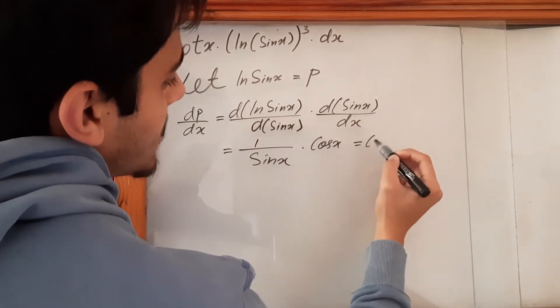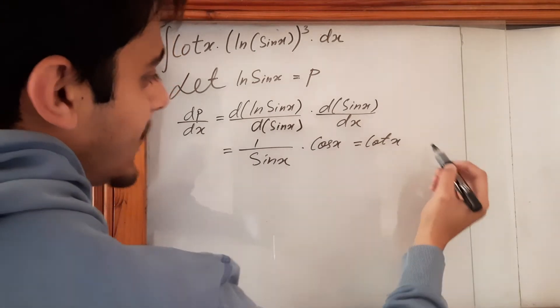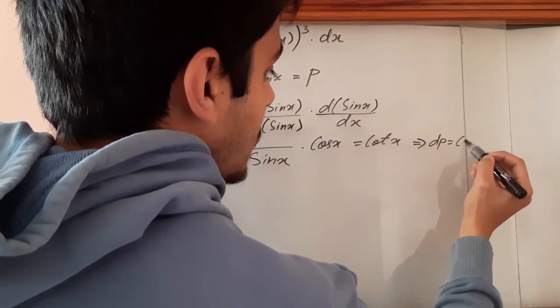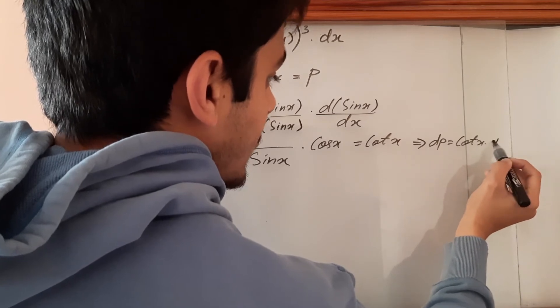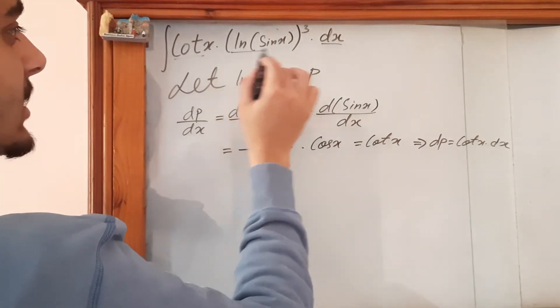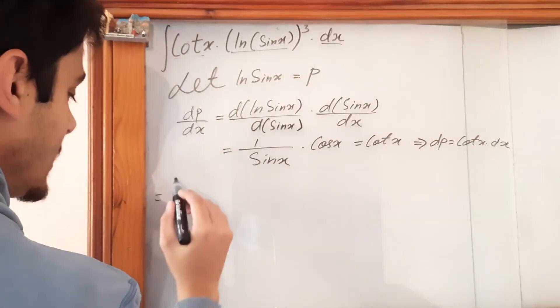And there you go. We've got cot x. So this implies that dp is equal to cot x times dx. So we have cot x times dx. We have this. So now it's simple integration.